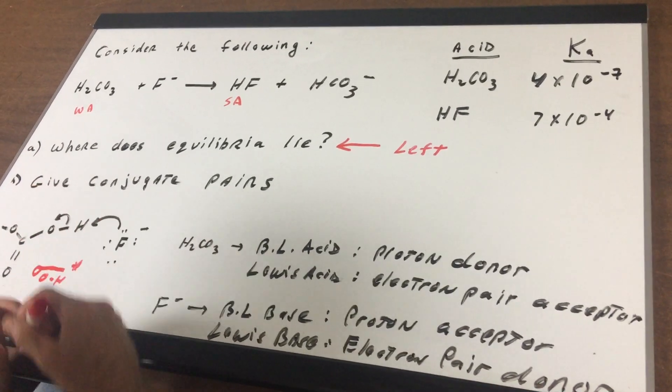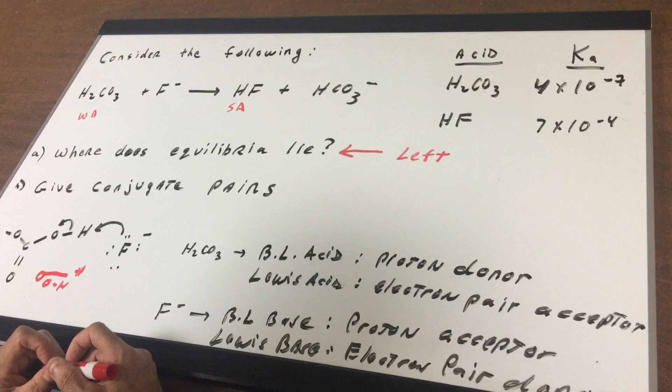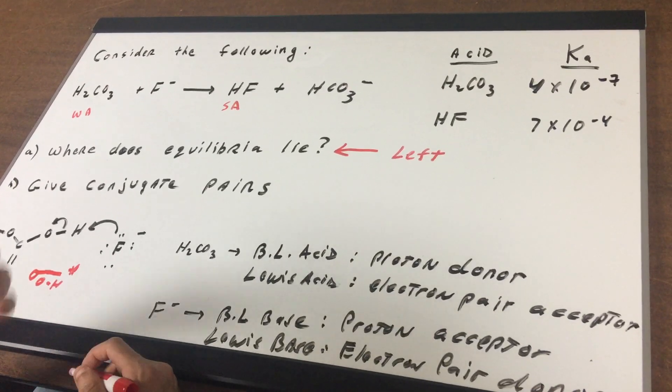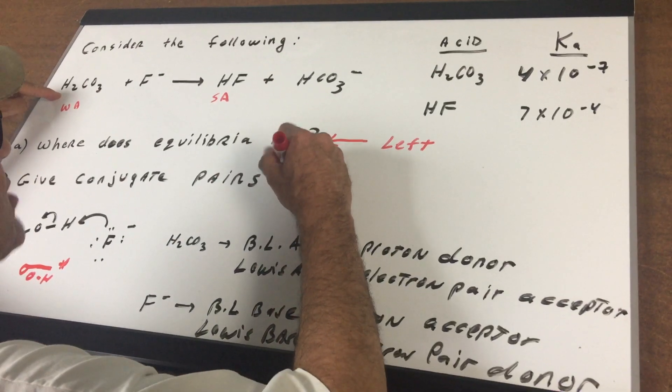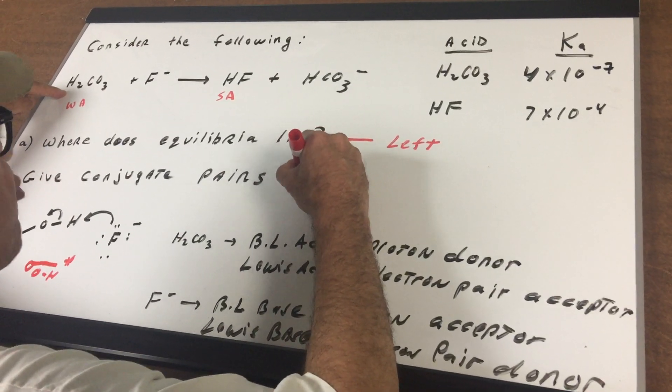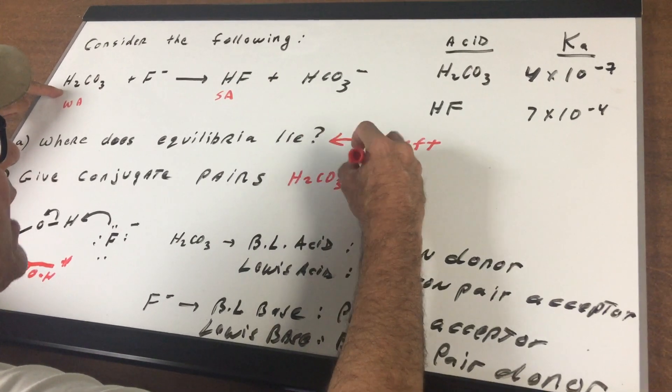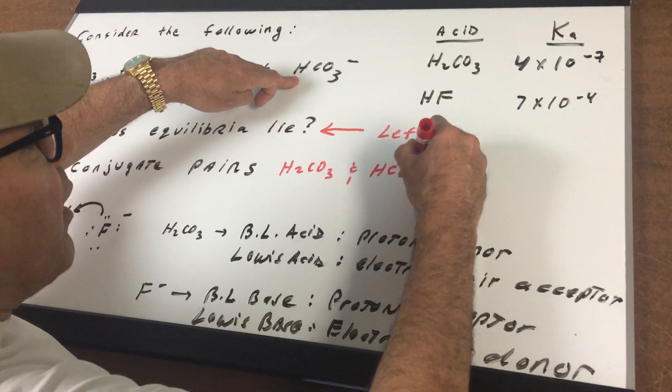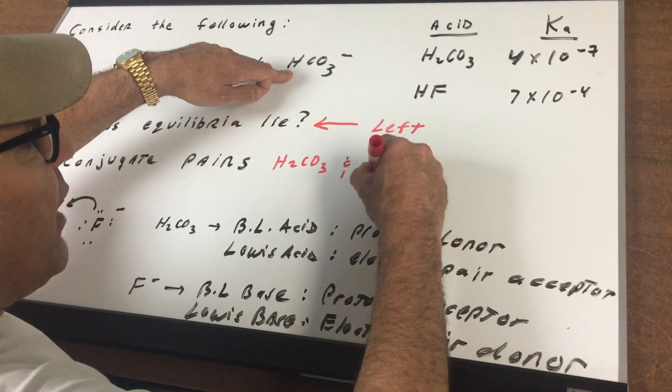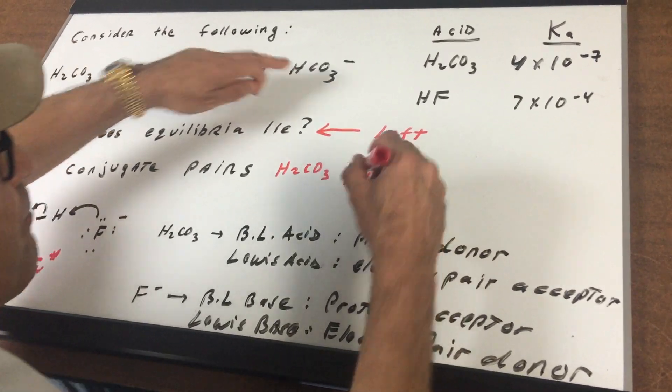Now, what if I say give the conjugate acid base pairs here? Well, we see here that this is carbonic acid, so this is the acid. H₂CO₃ is the acid, and that means that HCO₃⁻ would be the conjugate base.